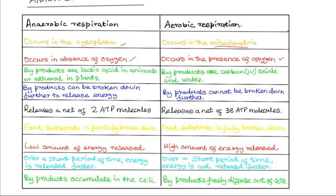In anaerobic respiration, the products are lactic acid in animals and ethanol in plants. But in aerobic respiration, lactic acid and ethanol are not produced; instead, carbon dioxide and water are the products. In anaerobic respiration, the products are not broken down completely.